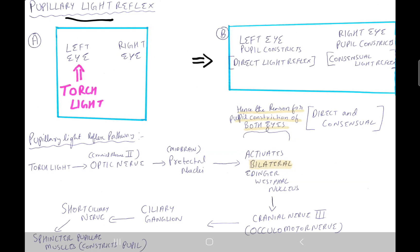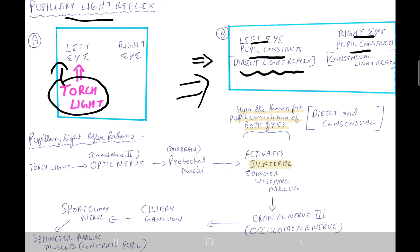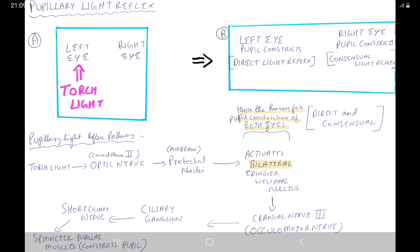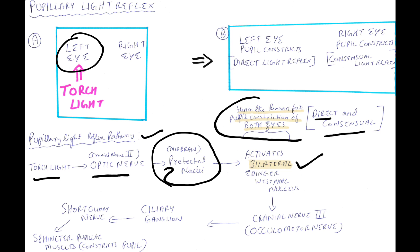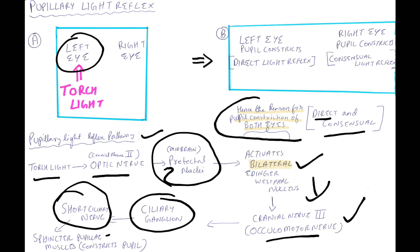The pupillary light reflex pathway: torch light is shown in the left eye. The left eye pupil constricts — direct light reflex — and the right eye pupil also constricts — consensual light reflex. The pathway goes from the optic nerve (CN II) to the pretectal nuclei in the midbrain, which activates bilateral Edinger-Westphal nuclei. From there it travels via the oculomotor nerve (CN III) to the ciliary ganglion, then via the short ciliary nerve to the sphincter pupillae muscle, causing pupil constriction.